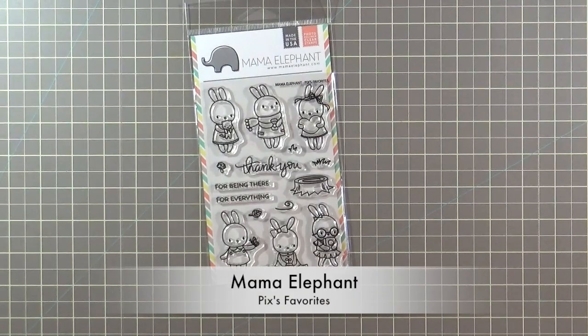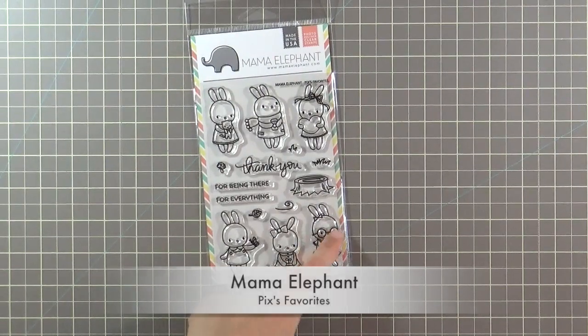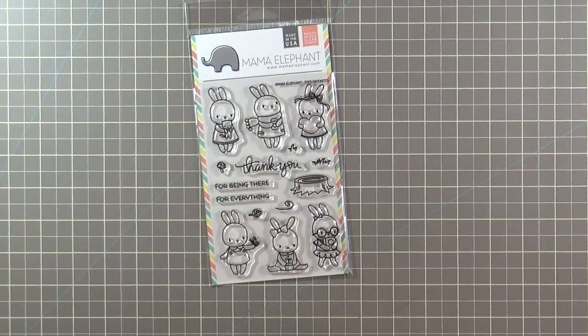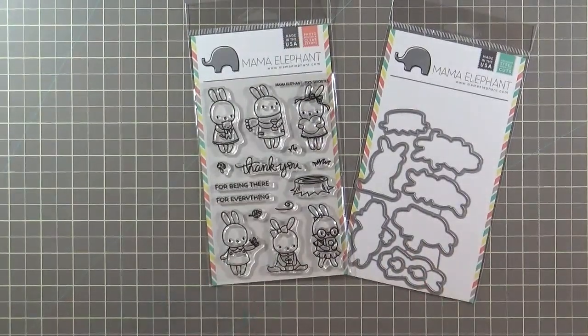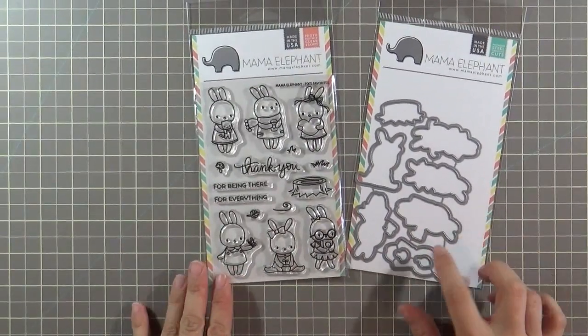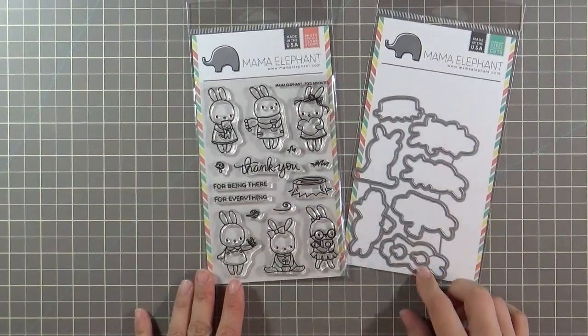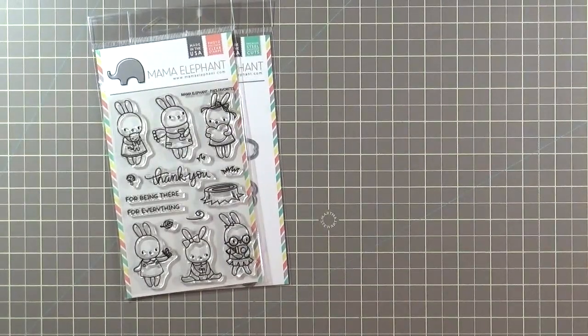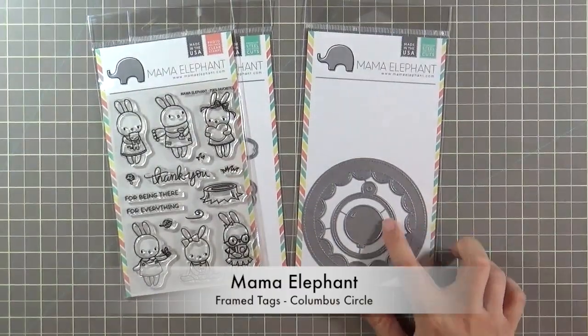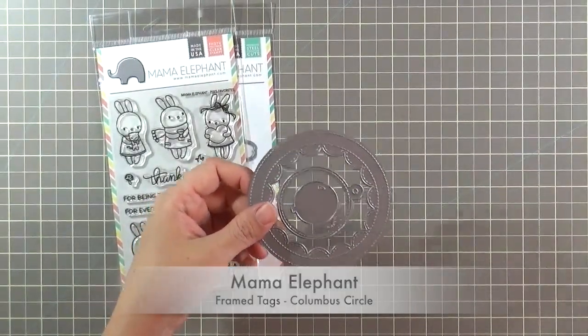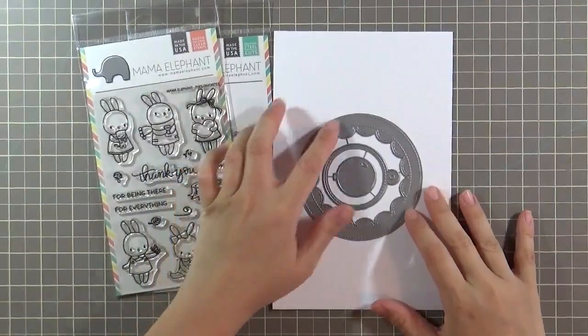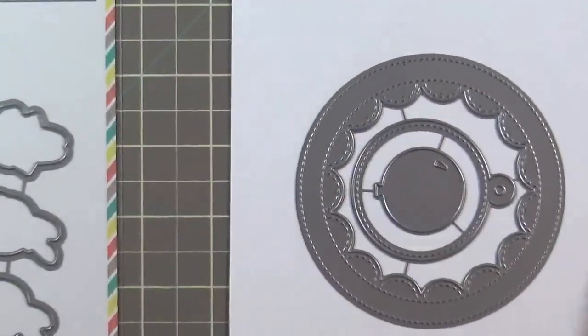The main stamp set I'm featuring is a new one from Mama Elephant called Pix Favorites and it features this really cute bunny rabbit named Pix. I love this cute bookworm type one in the lower right corner. I'm also born in the year of the rabbit so this one was especially perfect for a birthday card for my mom. It also comes with these matching coordinating creative cut dies. I'm also going to be using a new die cut that came out called Columbus Circle.